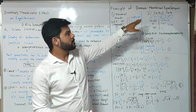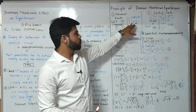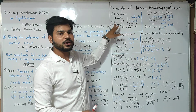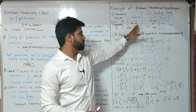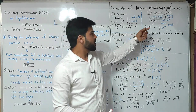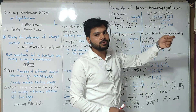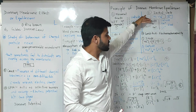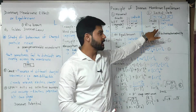Now let's understand the principle of Donnan Membrane Equilibrium. In a normal body, the movement of ions like sodium chloride is simple — inside refers to the stomach (GIT side) and outside denotes the bloodstream. When we take sodium carboxymethyl cellulose as a non-diffusible polyelectrolyte, indicated by R⁻, it is placed inside (GIT side). It will dissociate as R⁻ and Na⁺ ions.